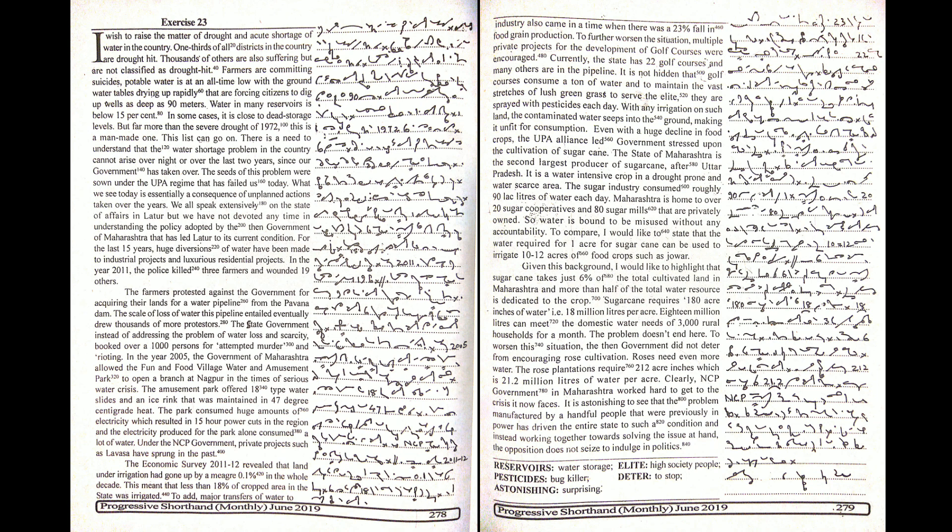Under the NCP government, private projects such as Lavasa have sprung up. The economic survey 2011-12 revealed that land under irrigation had gone up by a meager 0.1% in the whole decade. This meant that less than 18% of cropped area in the state was irrigated.